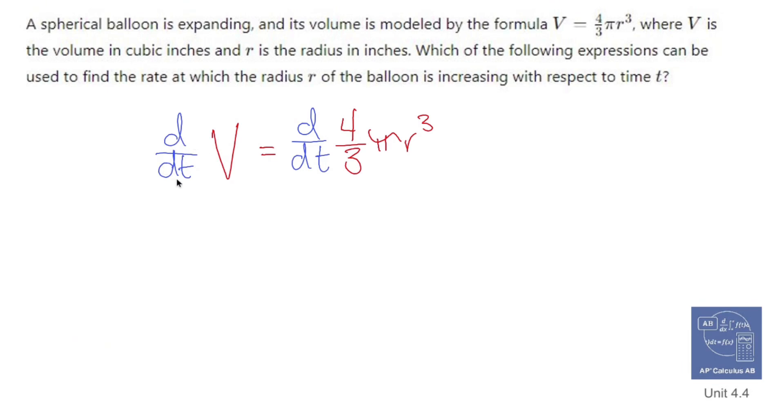Now the derivative with respect to t of V is just one. But since we're taking the derivative of V, we attach dV dt.